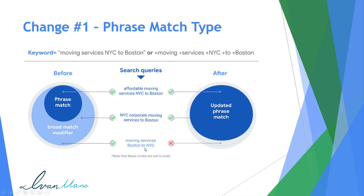For the last example, 'moving services Boston to NYC' — as of right now, your ads would show up because all the words are in there. They're not in the same order, but they will still show up. Now with this upcoming change, notice there's just phrase match type — we'll discuss what happens to broad match modifier next. You can see that this last search term, 'moving services Boston to NYC,' no longer shows up. Google is saying the order matters here — 'moving services NYC to Boston' is important because we're booking from NYC to Boston, not the other way around. So because Google is smart and shifting towards a more automated approach, they're saying in this case, the order matters, and your ads will not show up for this specific keyword.